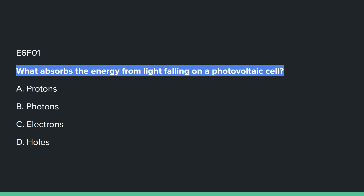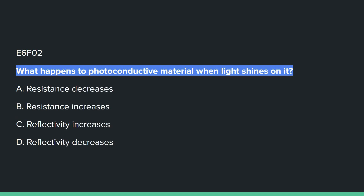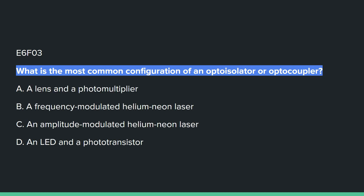E6F01: What absorbs the energy from light falling on a photovoltaic cell? C, electrons. E6F02: What happens to photoconductive material when light shines on it? A, resistance decreases. E6F03: What is the most common configuration of an optoisolator or optocoupler? D, an LED and a phototransistor.